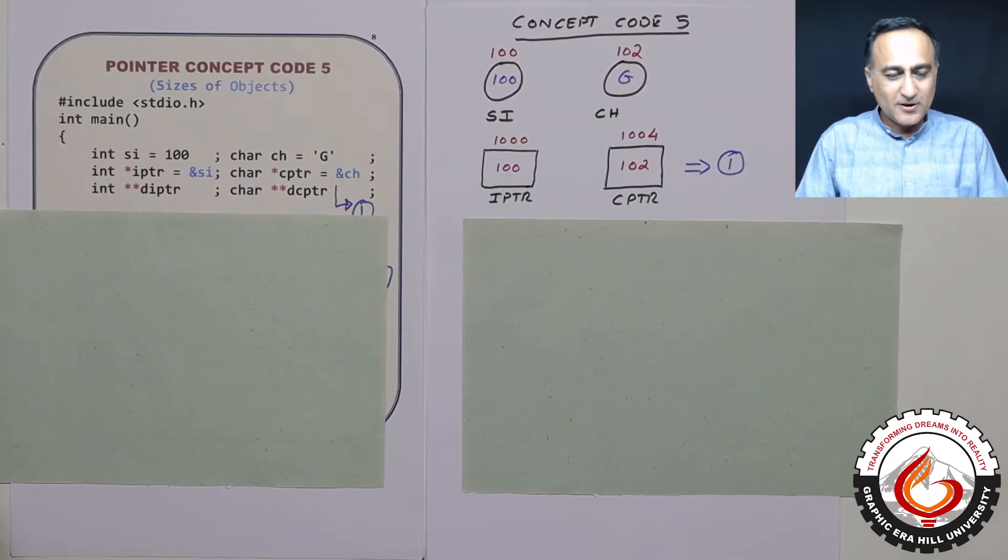Pointers concept code number five. In this particular program, we're going to try to determine the size of different objects like integers, characters, single pointers, pointer to a pointer, and so on.